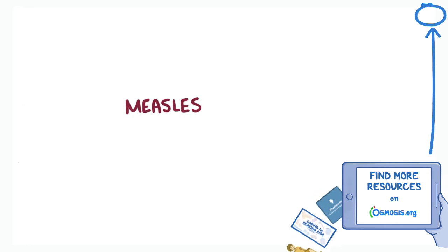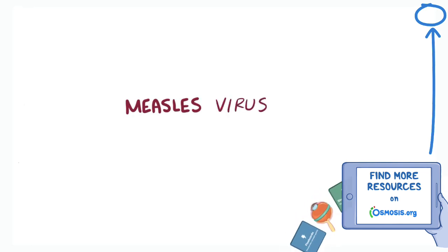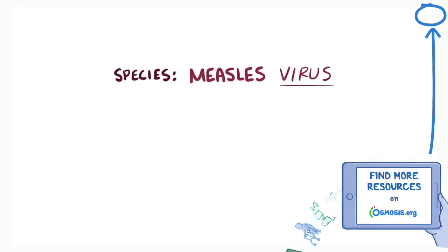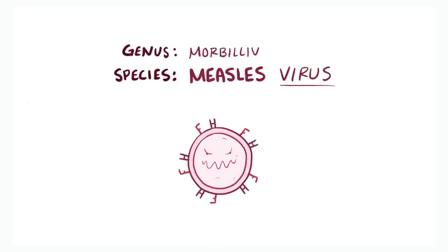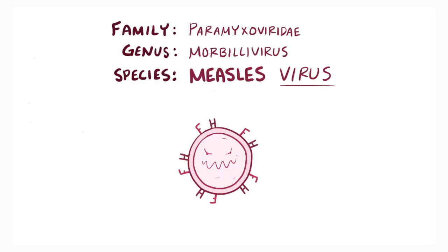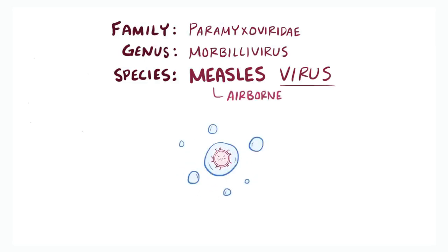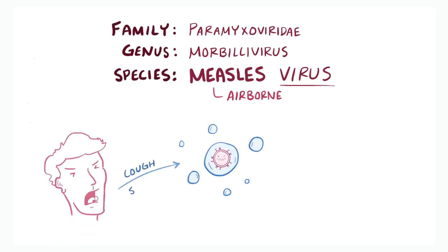Regular measles is caused by the measles virus — the species is literally called the measles virus — of the genus Morbillivirus, and family Paramyxoviridae. The reason why this virus is so contagious is that it's airborne, spreading via tiny liquid particles flung into the air when someone sneezes or coughs, and can live for up to 2 hours in that airspace or on nearby surfaces.